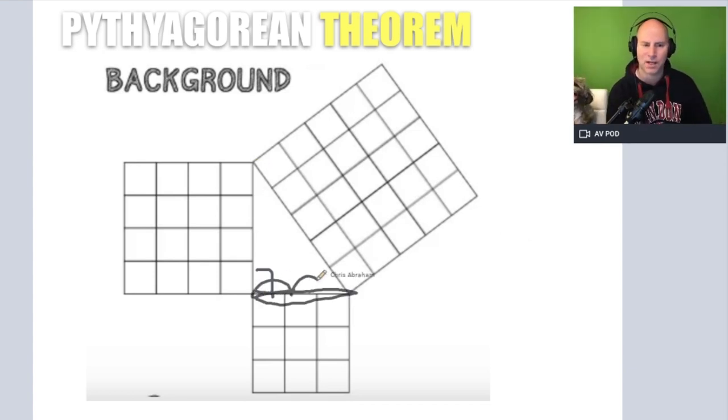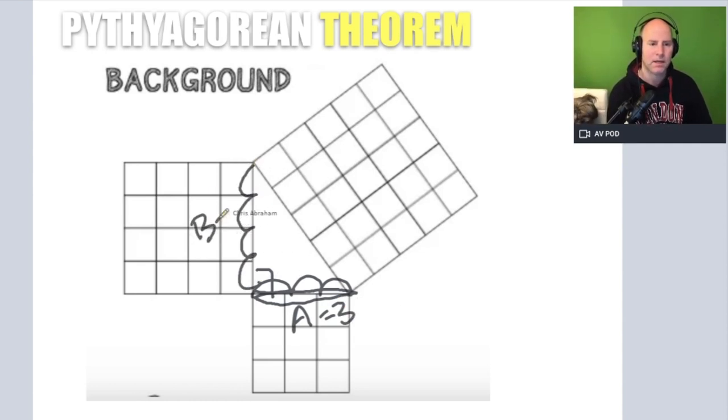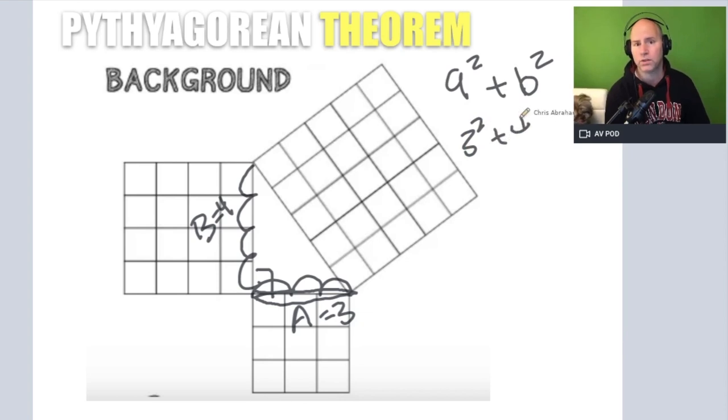We take this side A, 1, 2, 3, that's A. A is equal to 3 and we take our side B which is 1, 2, 3, 4. We'll say B here is equal to 4 and we take these two sides and we square them. So we do A squared plus B squared or 3 squared plus 4 squared.